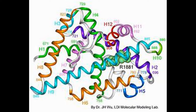Acne vulgaris is activated by androgens in those genetically predisposed. Androgens stimulate the cells that line the follicular canal to produce keratin and cause the sebaceous glands to enlarge and produce more sebum, which blocks off and causes oil to accumulate. Bacteria accumulate in the oil, producing blackheads, whiteheads, and inflammation papules.